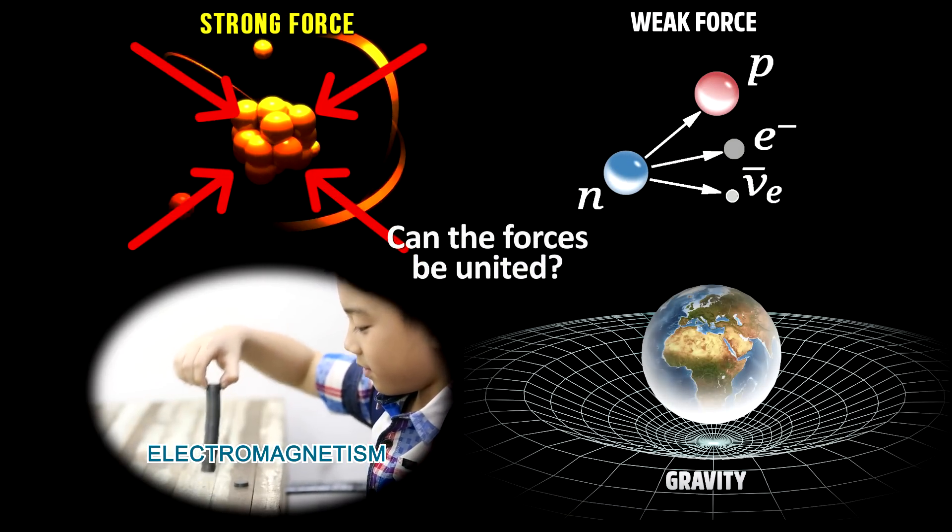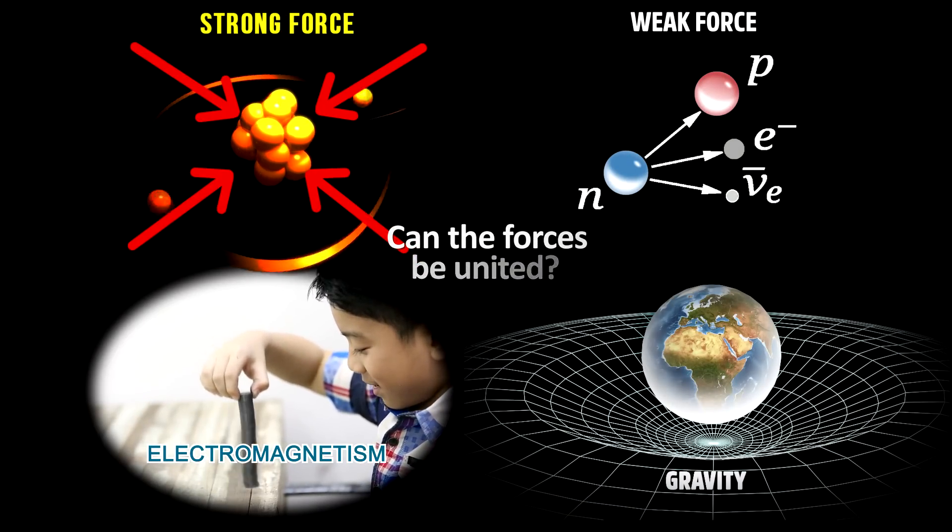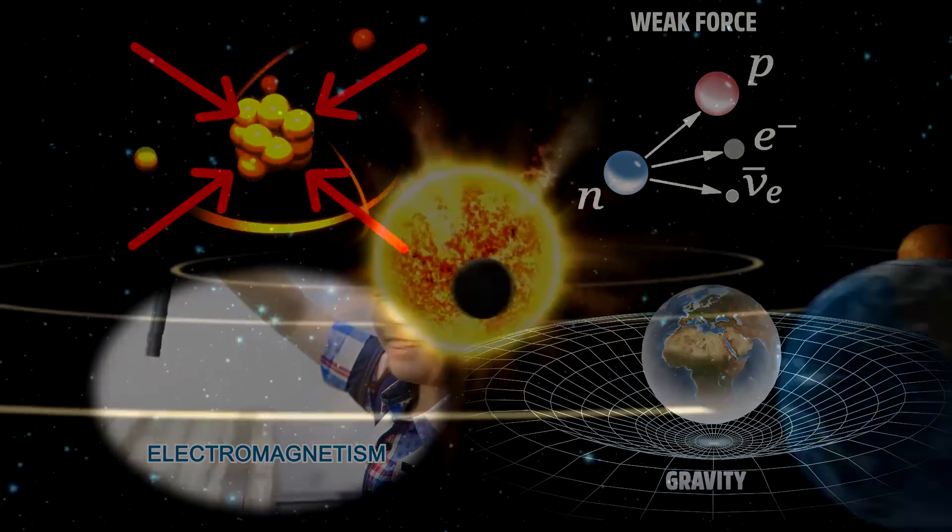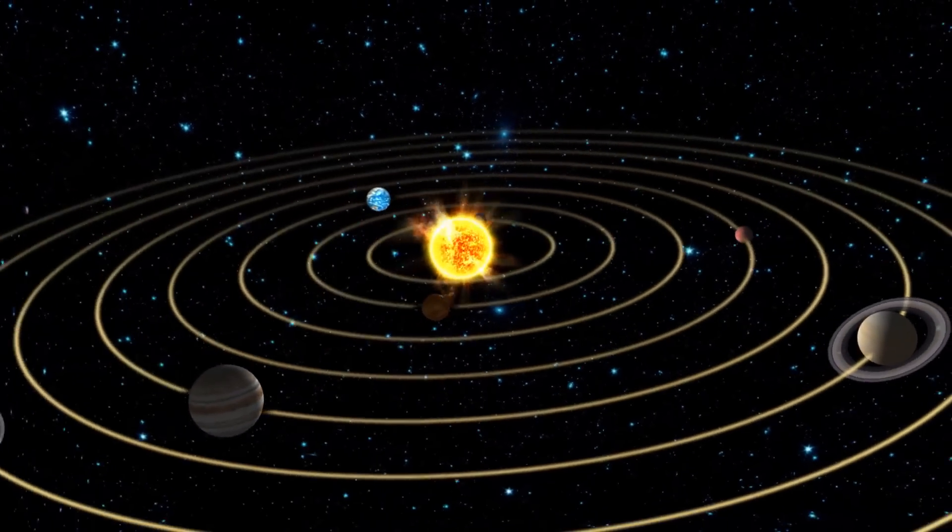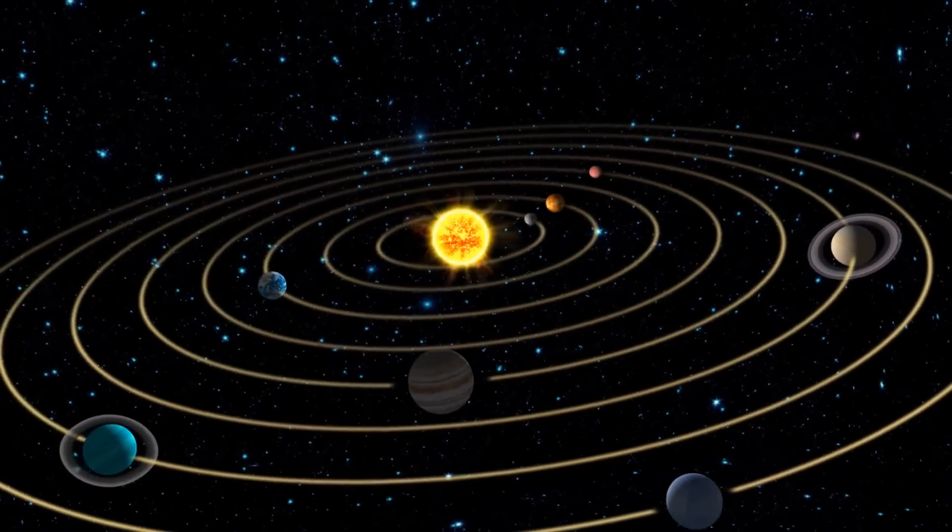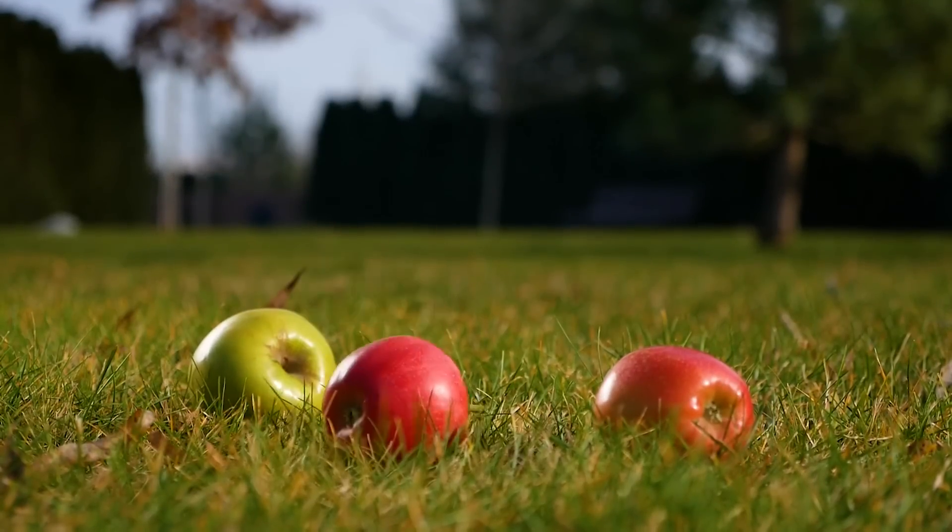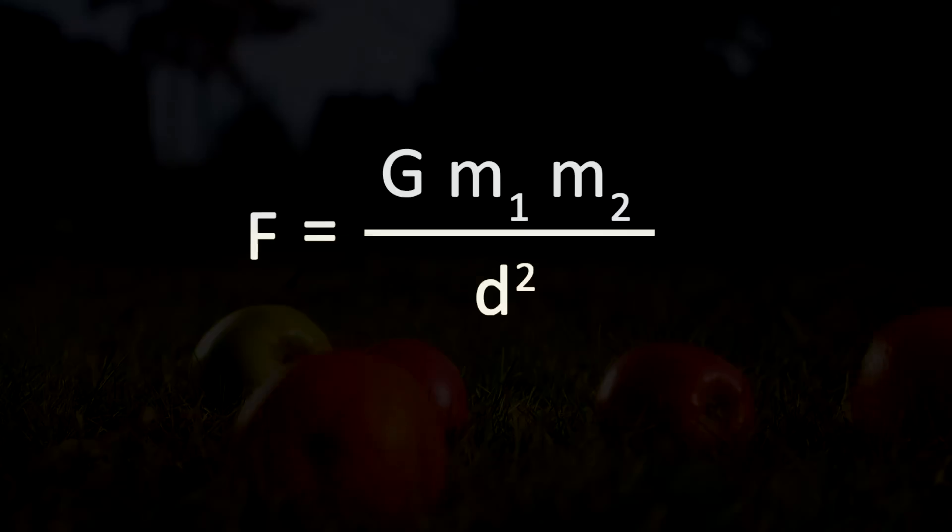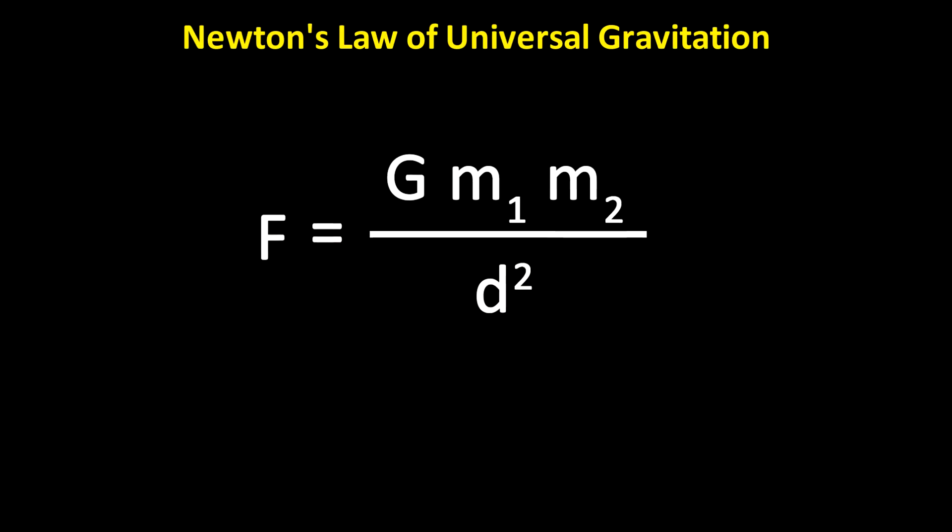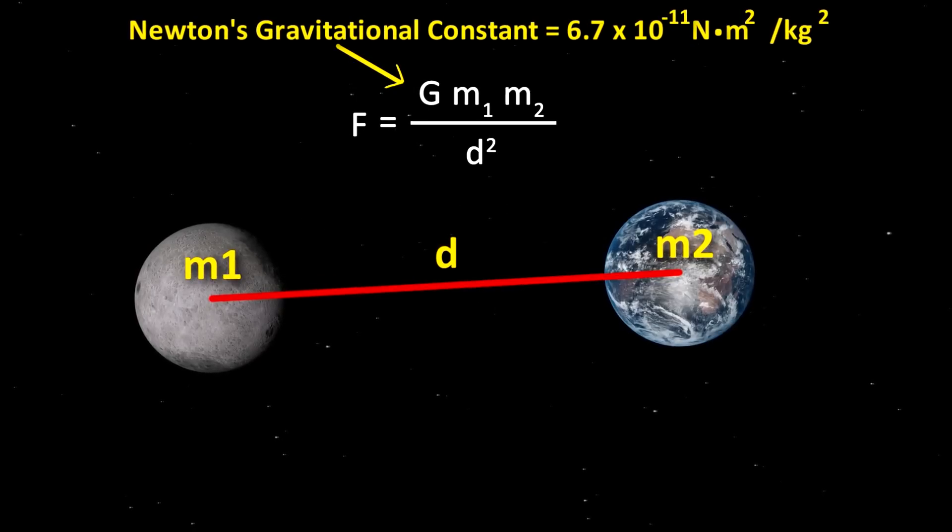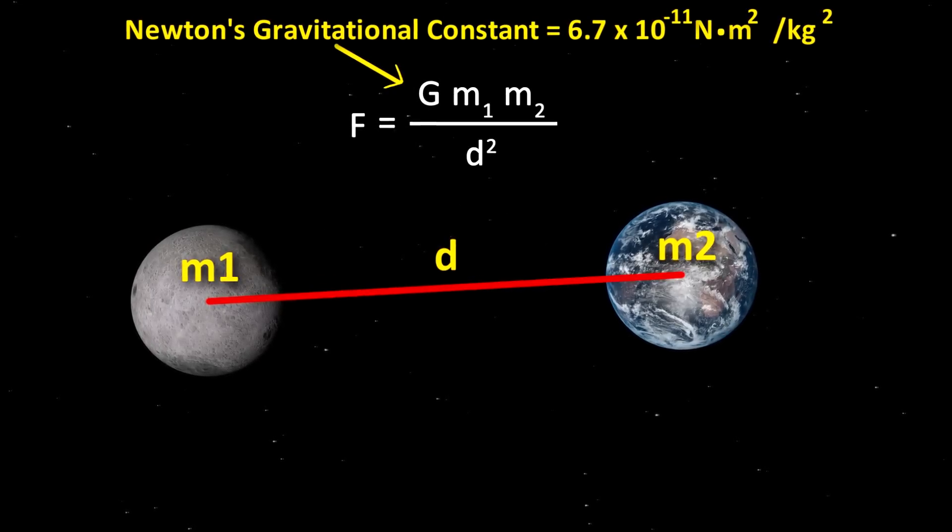Can these forces be united? I think it is possible if we go by the historical precedent, because we have united forces in the past. For example, up until the 17th century, it was thought that the motions of the heavenly bodies were controlled by a different mechanism than the motions of objects on earth. However, in 1687, Isaac Newton showed that these two phenomena were ruled by one principle, the principle of universal gravitation.